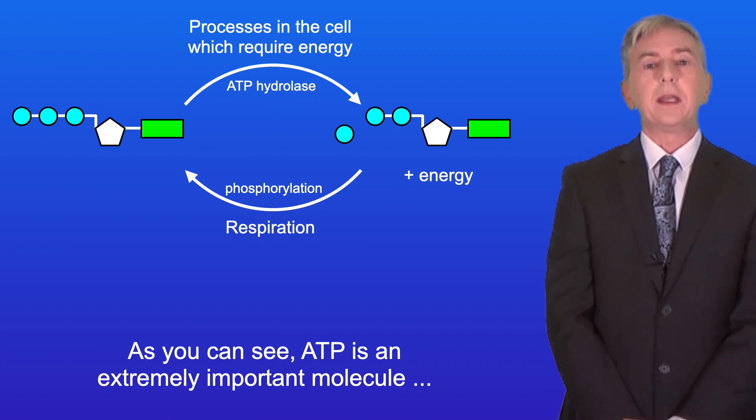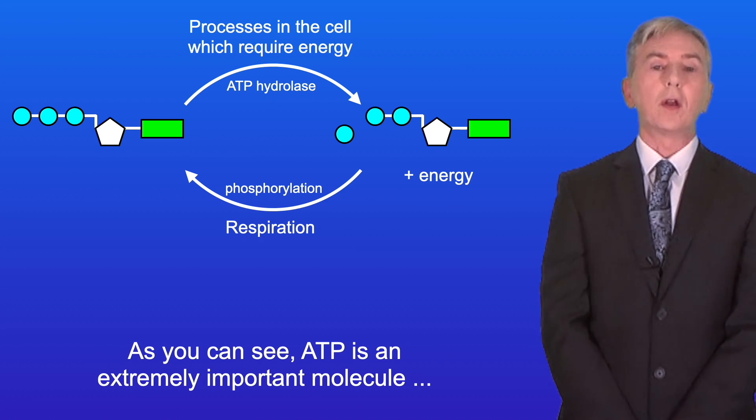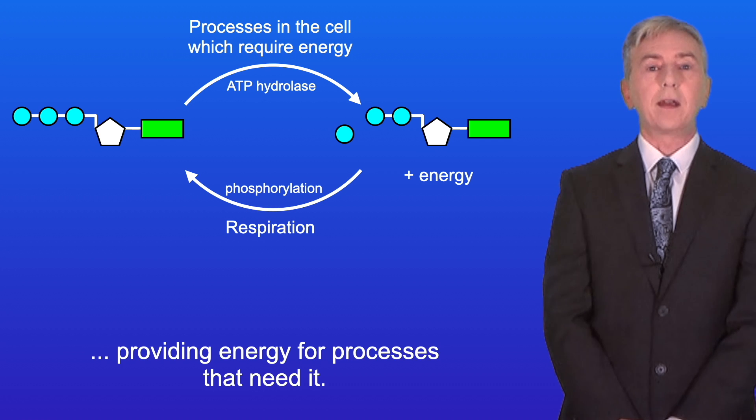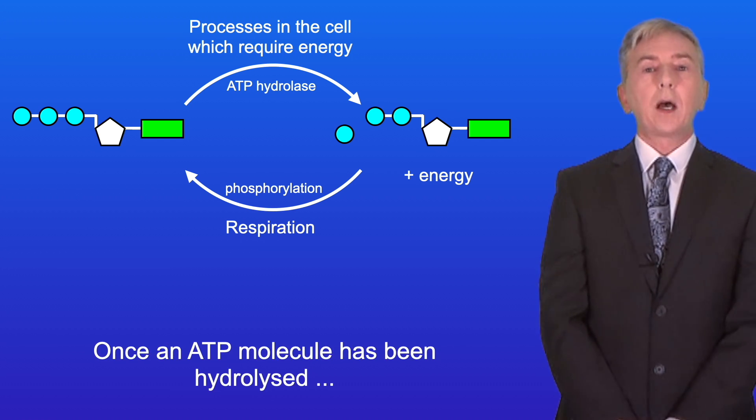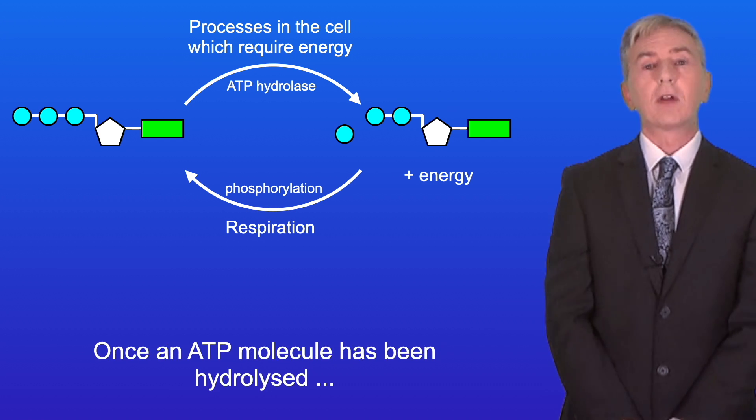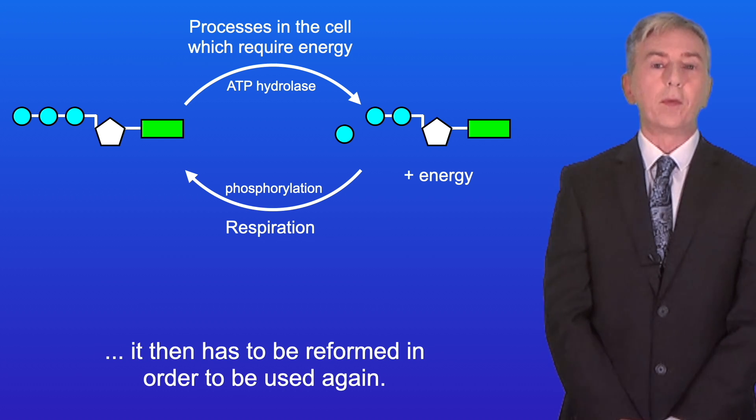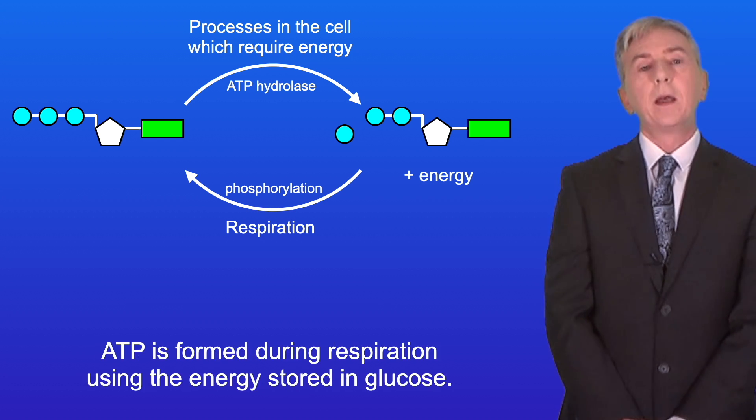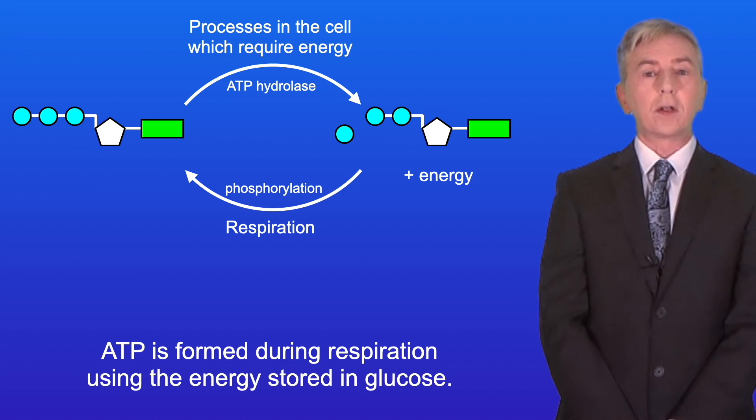So as you can see, ATP is an extremely important molecule, providing energy for processes that need it. Now once an ATP molecule has been hydrolyzed, it then has to be reformed in order to be used again. And ATP is formed during respiration, using the energy stored in glucose.